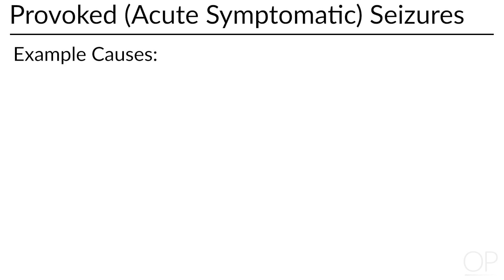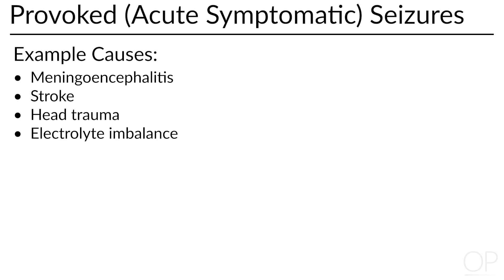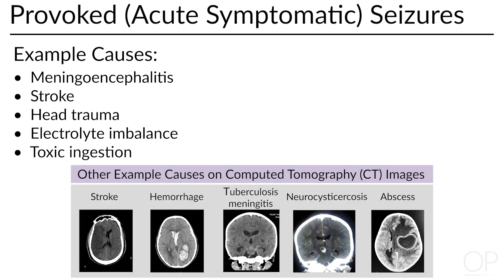In evaluating a child with seizures, it is important to determine if the seizures are provoked or unprovoked. Provoked seizures, or acute symptomatic seizures, are due to an immediate or transient problem. Examples include meningoencephalitis or encephalitis, acute stroke or head trauma, electrolyte imbalance, or toxins including alcohol or other substances. A history of injury to the brain months or years prior does not count, as it is not an immediate or transient problem. To identify if a seizure is provoked, you must pay attention to the details of the clinical presentation, as treatment is focused on treating the underlying disorder in addition to acute seizure management.